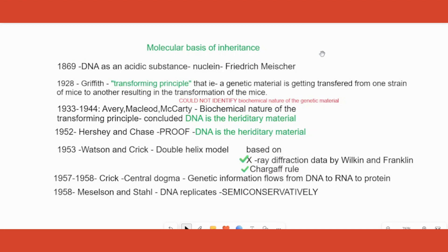Now we know there are two types of genetic materials: DNA and RNA. Most organisms have DNA as their genetic material, and some viruses have RNA. But at a previous time this was not known, so there were many experiments and scientists involved in proving it and understanding its biochemical nature. In 1869, there was a person called Frederick Miescher.